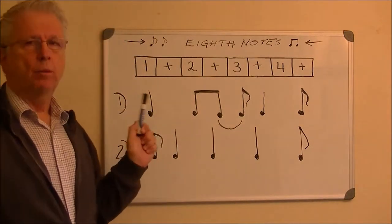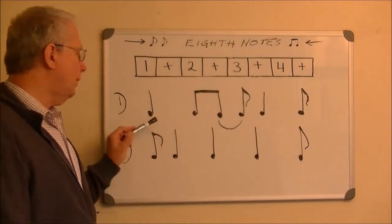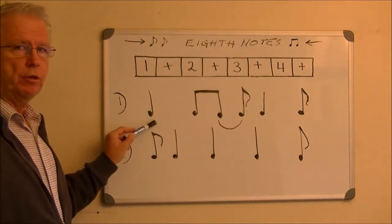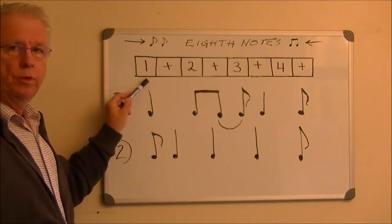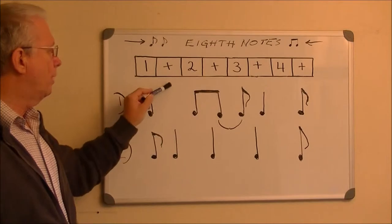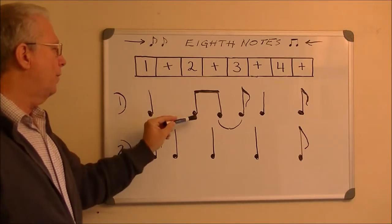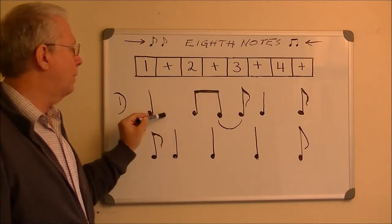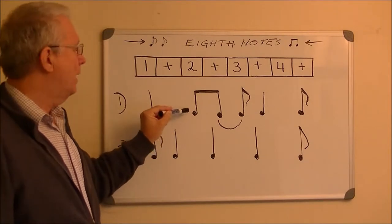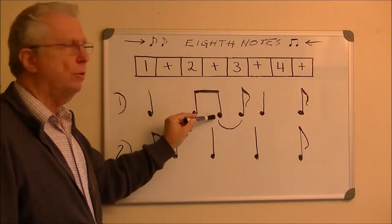And then figure out where the beats are. This is the first beat in this measure. It lines up with the 1. A quarter note covers the 1 and the and. This is the second beat because we're out of time on the first beat. And it covers the 2 and the and of 2.